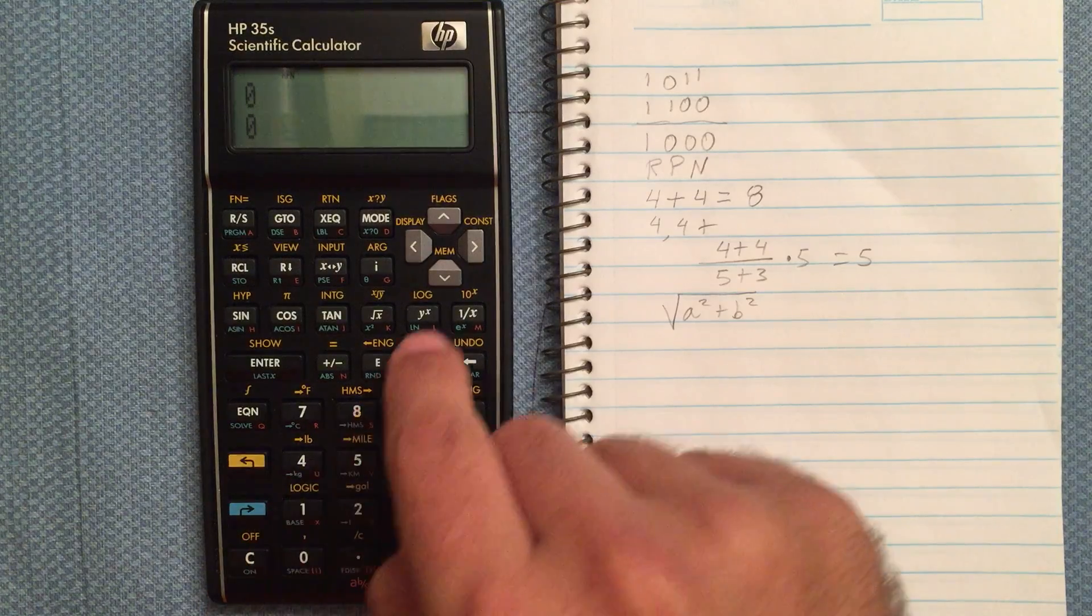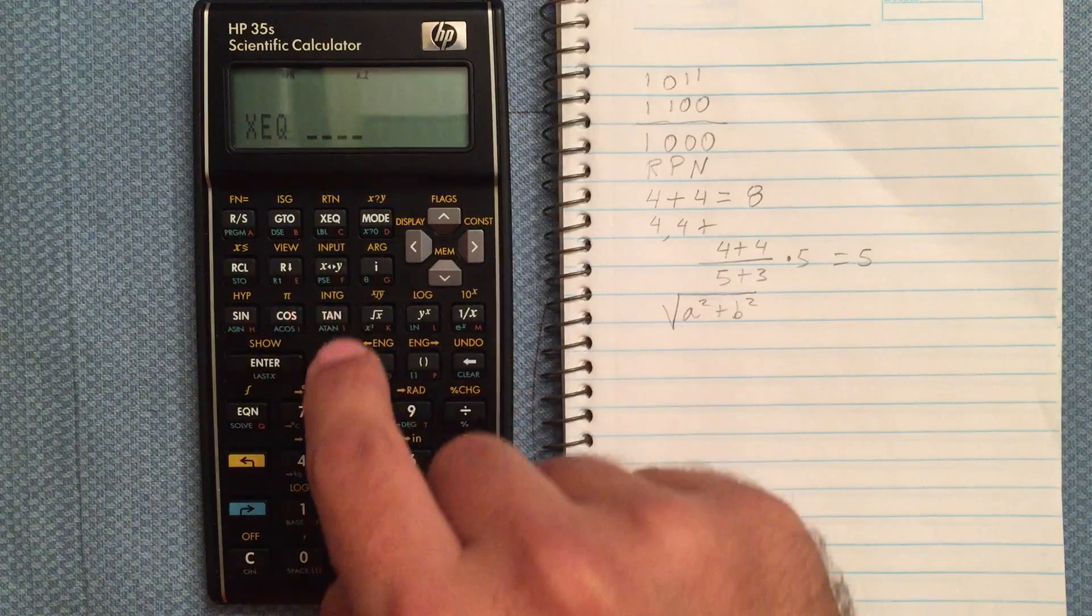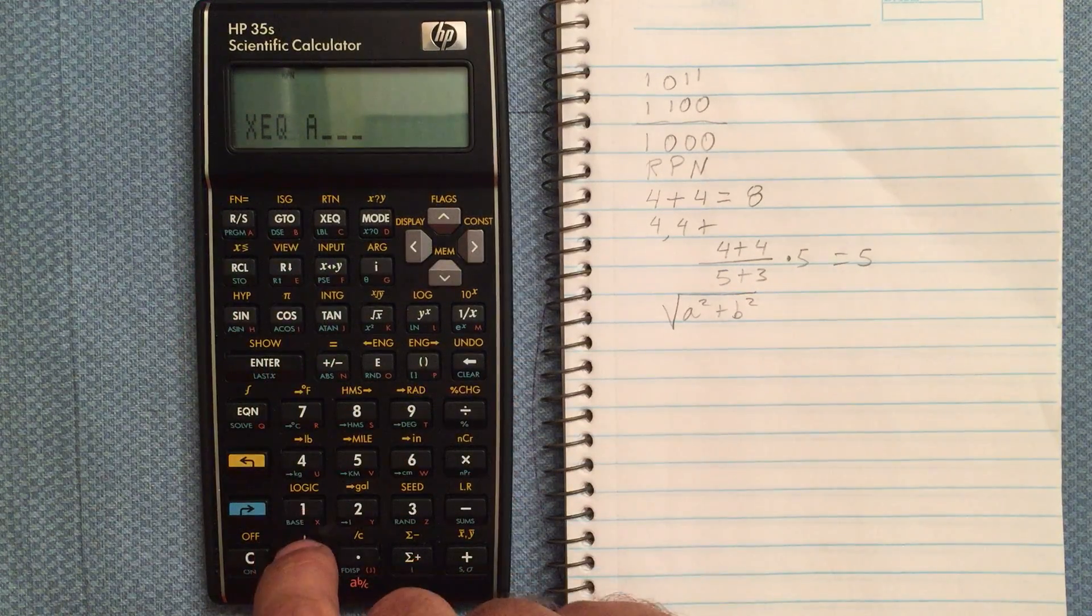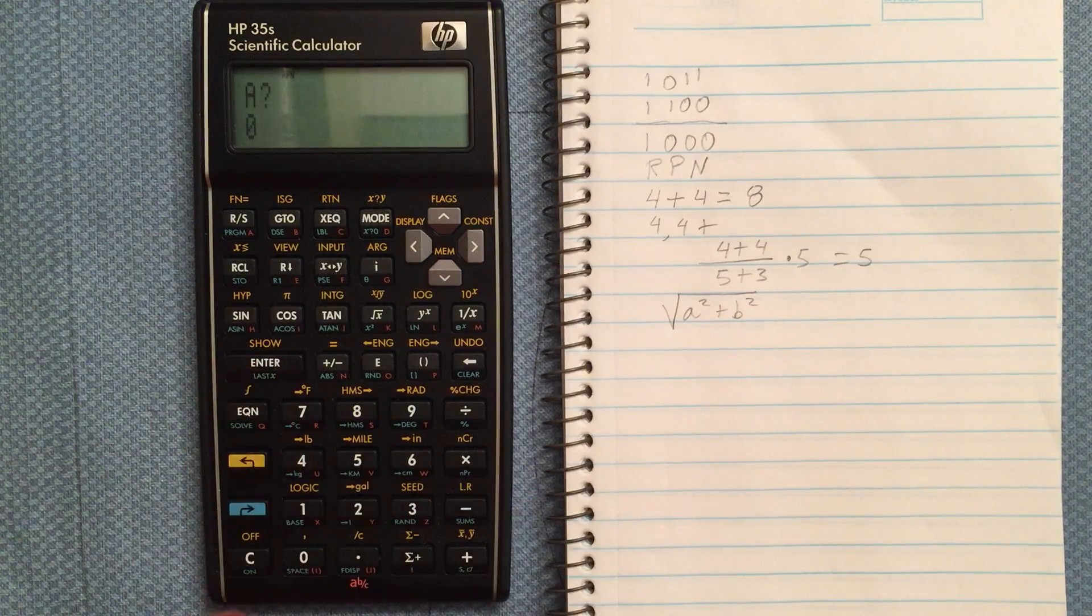So there's our program. To execute it, hit the execute button and then our program label is A. You can enter in 001 to go to the first line or just hit enter. So it asks us for A.